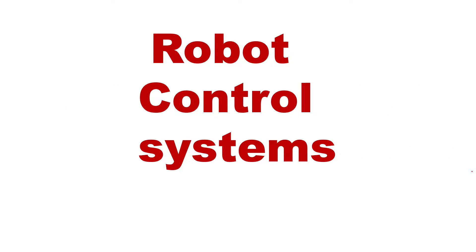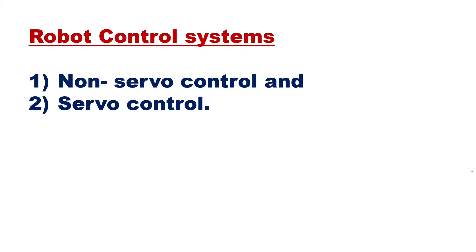Today's topic is robot control systems, and as mentioned, we'll have two types: one is called non-servo control and the other is called servo control. Non-servo control is an open loop system — it will not have any feedback.